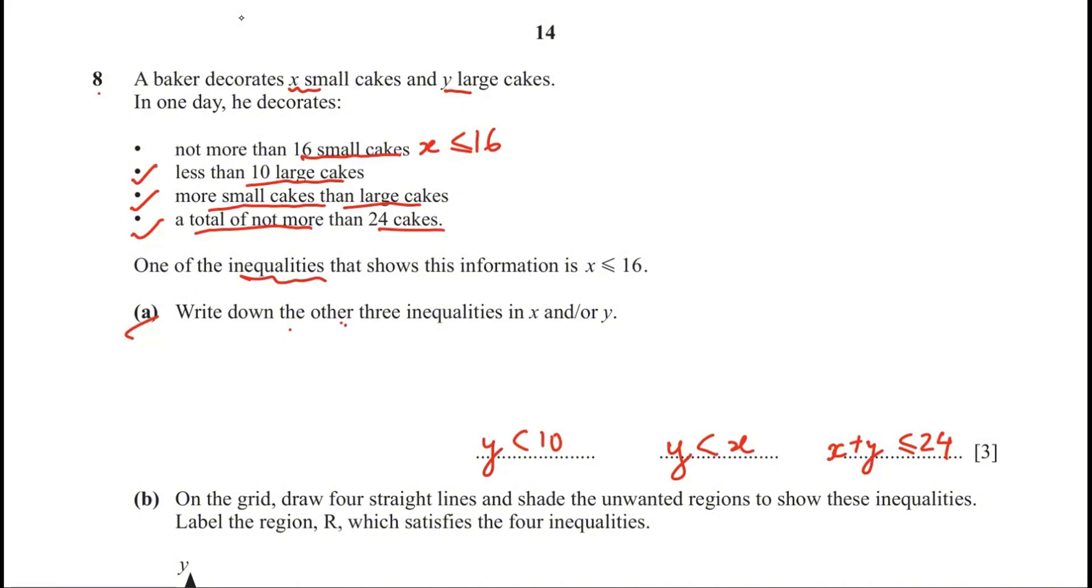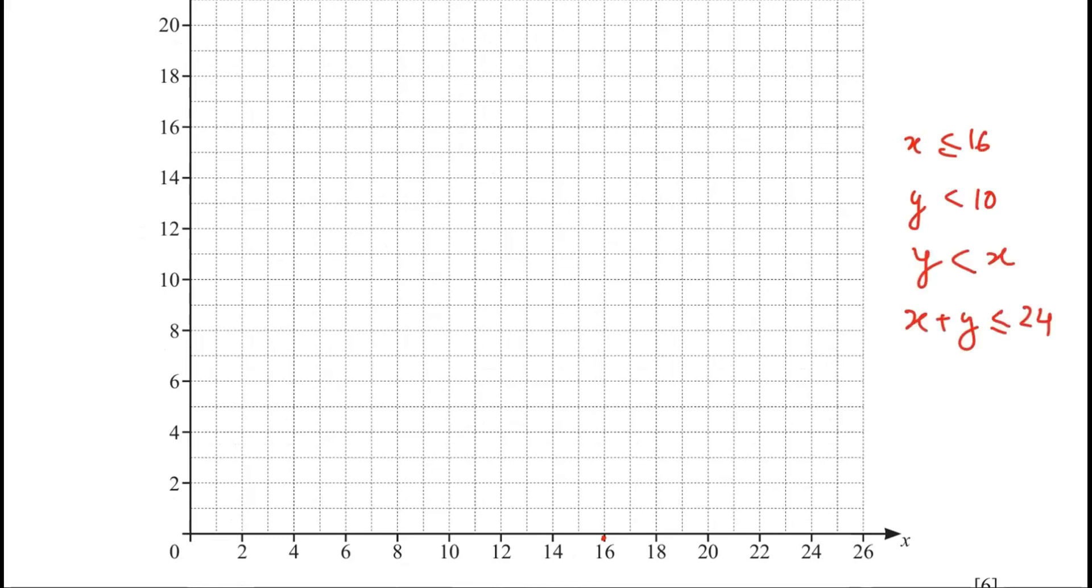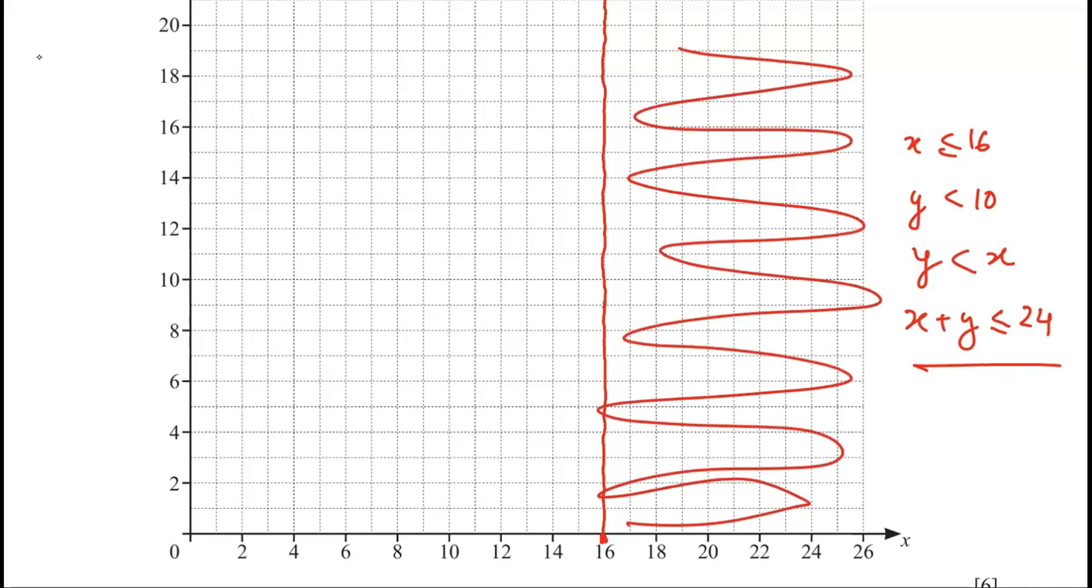Look at part B. On the grid, draw four straight lines and shade the unwanted regions to show these inequalities. Label the region R which satisfies the four inequalities. So the first one, x is less than or equal to 16. I need to draw a line at x is 16 and it should be a solid line. When the line is solid, we can say that includes 16. We need to shade the unwanted region. So all to the left of the line is the region we don't want, the unwanted region.